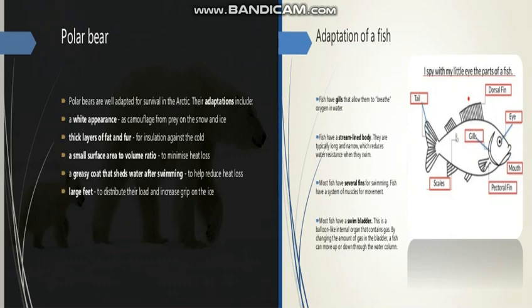Next is the adaptation of fish. Fish live in the water, and they have special adaptations by which they can easily survive there. To breathe in the water, fish have a special organ called gills. In our body there are lungs, which we use to breathe on land, but fish live in the water and breathe using gills.